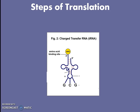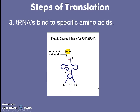The whole process of translation is going to rely on a new type of RNA called transfer RNA, or tRNA. You might want to draw this example of a tRNA in your notes. A tRNA kind of looks like the shape of the letter T. At the top of the T there's a circle representing an amino acid — one of the 20 amino acids. At the bottom of the T, we have three different nucleotide letters, and these three letters are really important. The tRNA will bind to specific amino acids at the top.